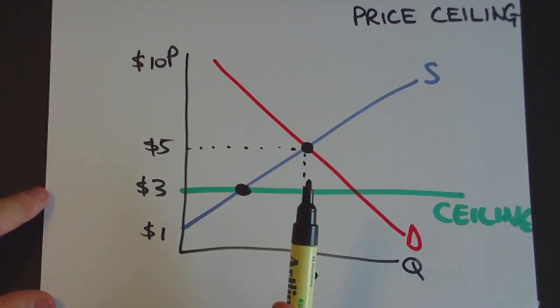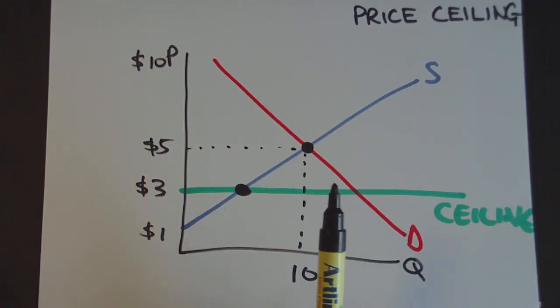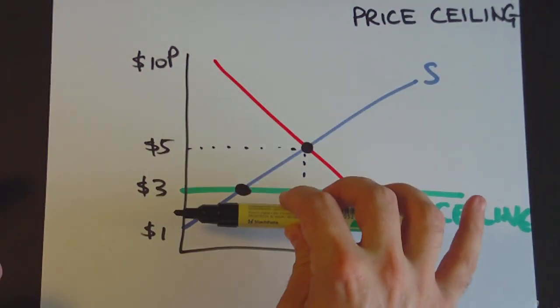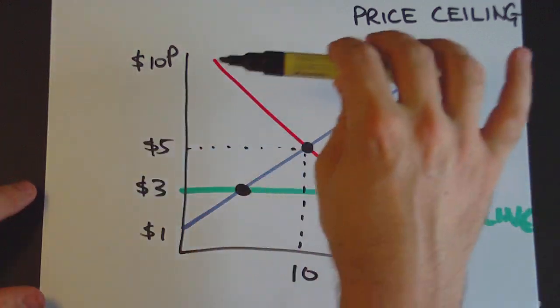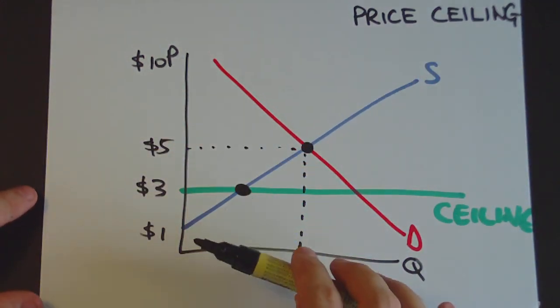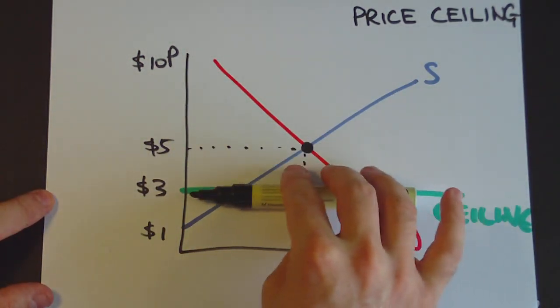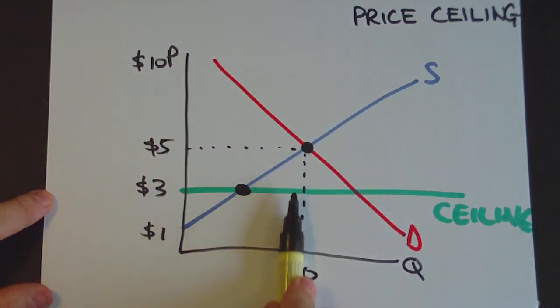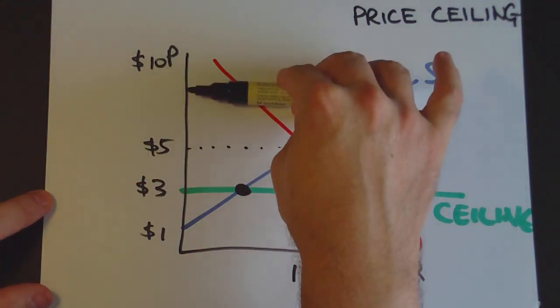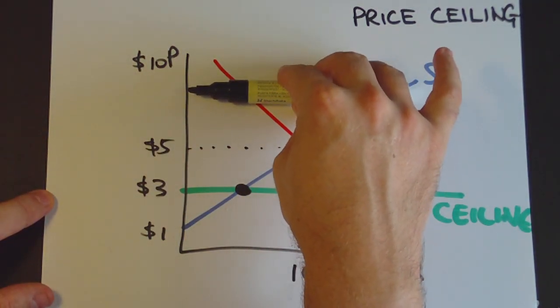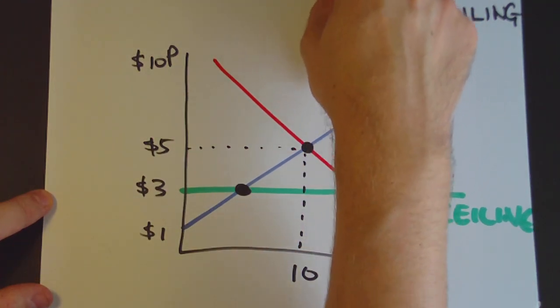This is the weird thing with price floors and price ceilings. Normally in a room, the ceiling is at the top and the floor is on the bottom. But on these supply and demand curves, in order for a ceiling to be effective, it needs to be below the equilibrium to prevent the price getting up. Likewise, the floor needs to be above the equilibrium to prevent the price from going down.